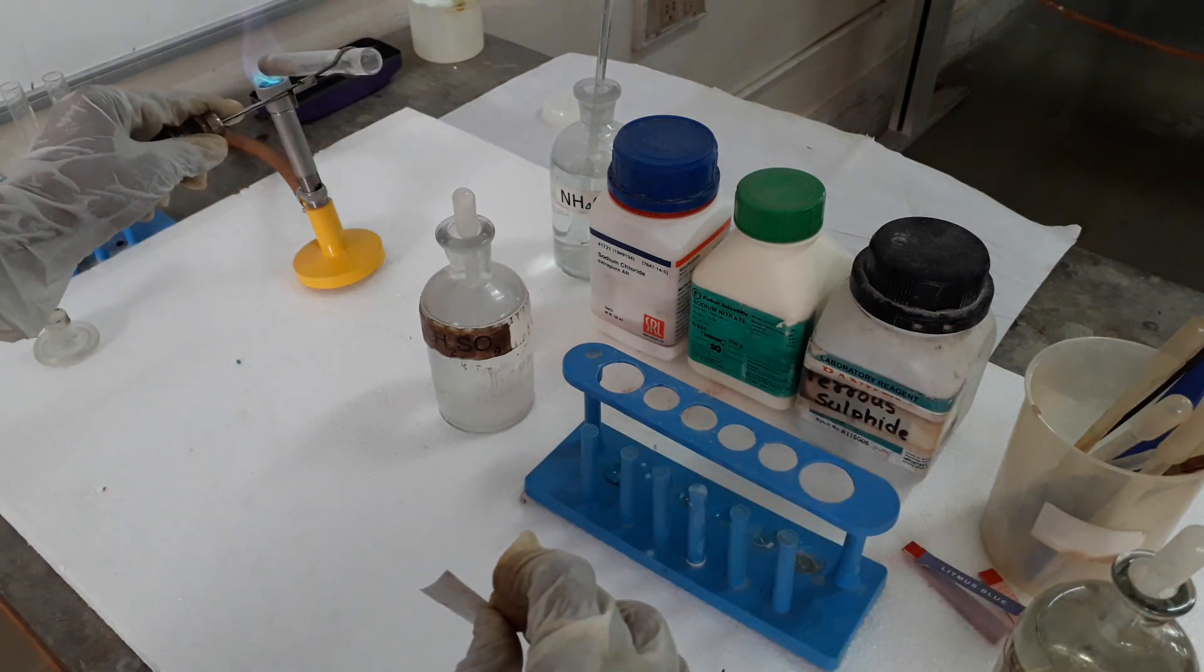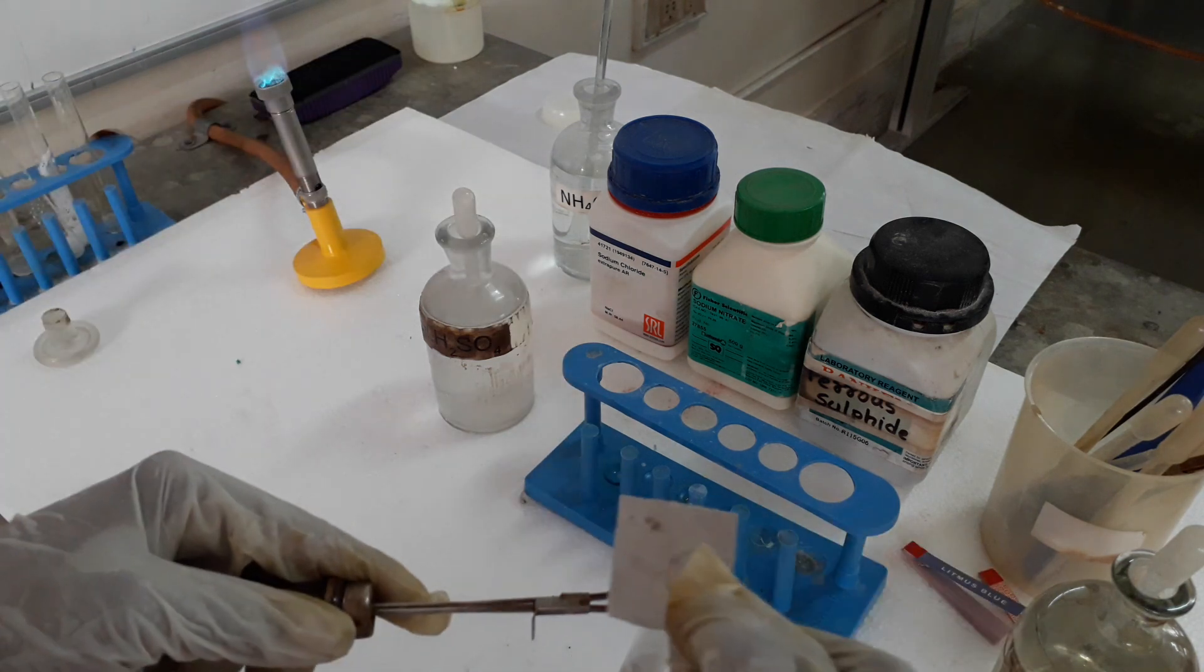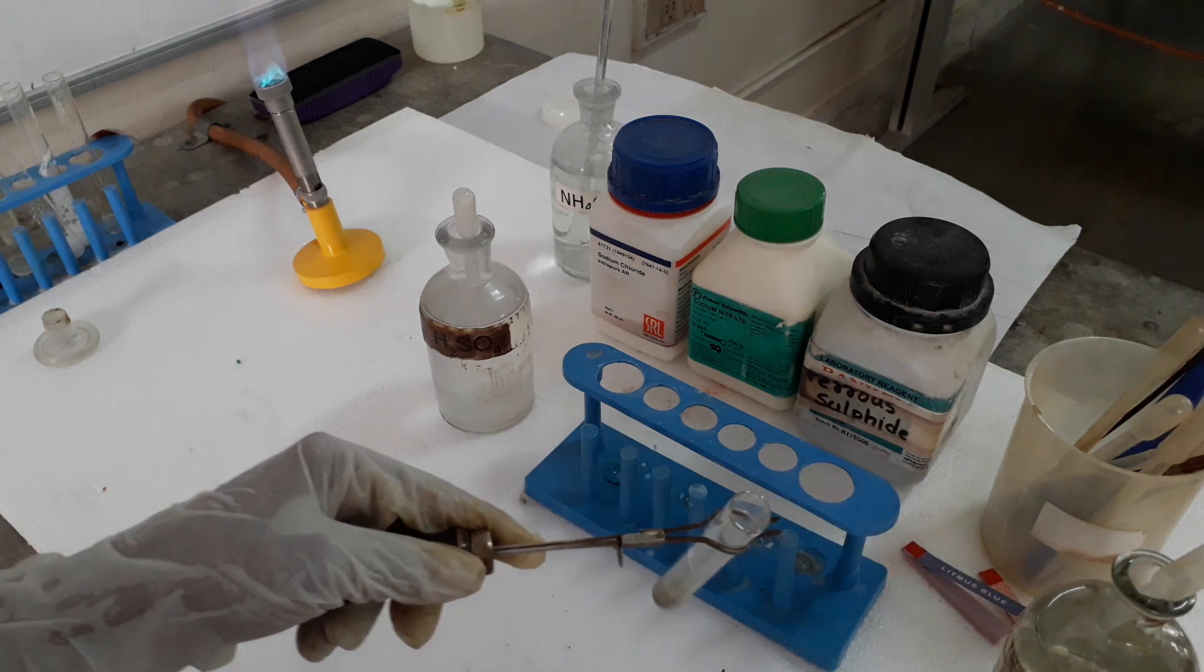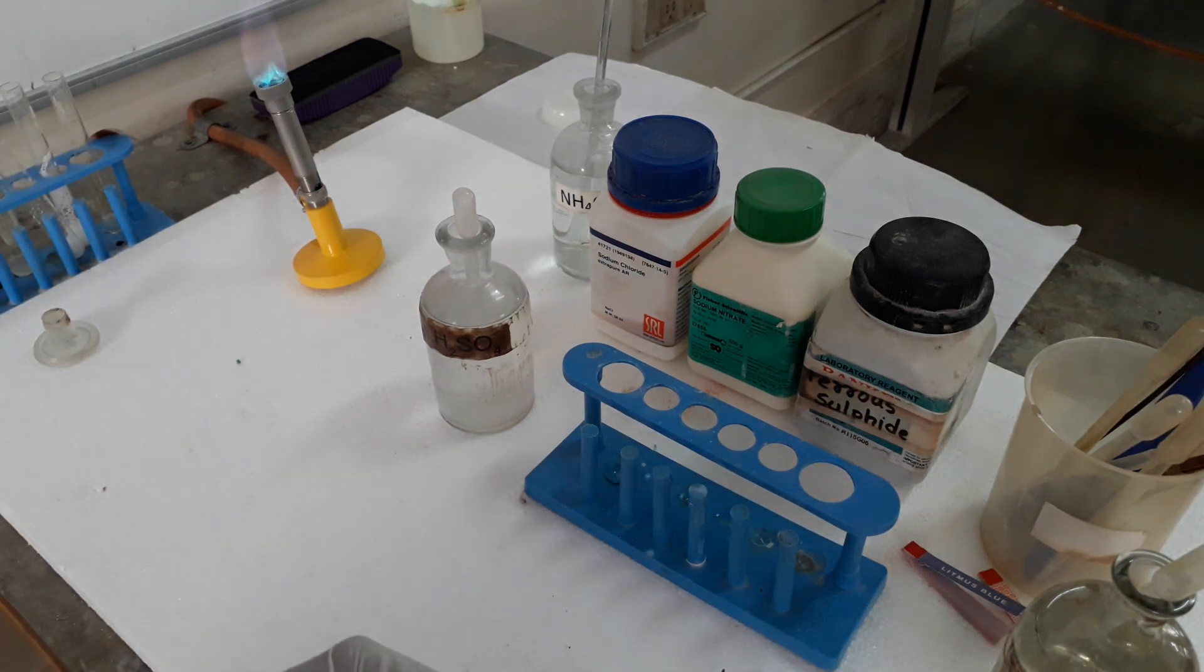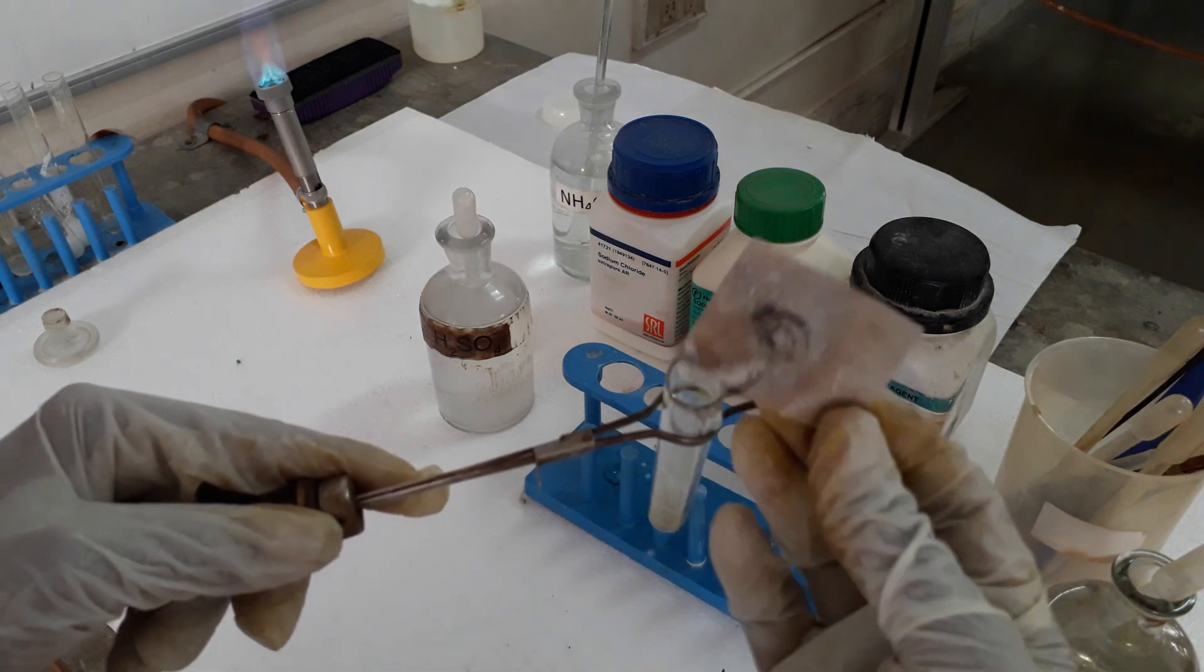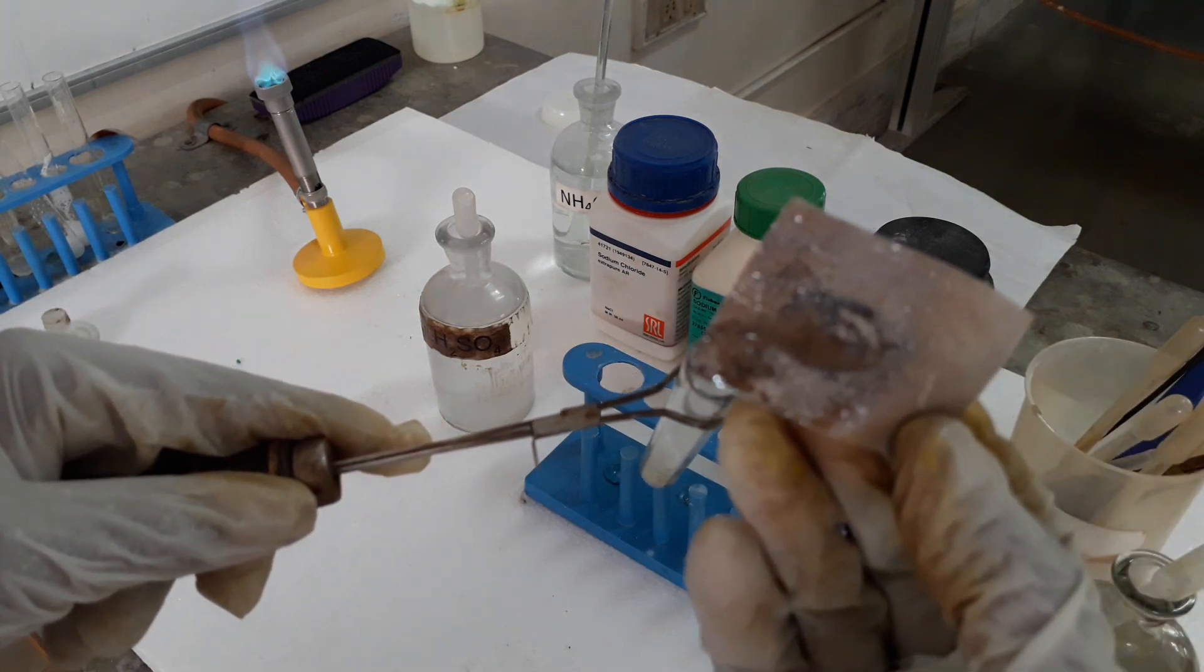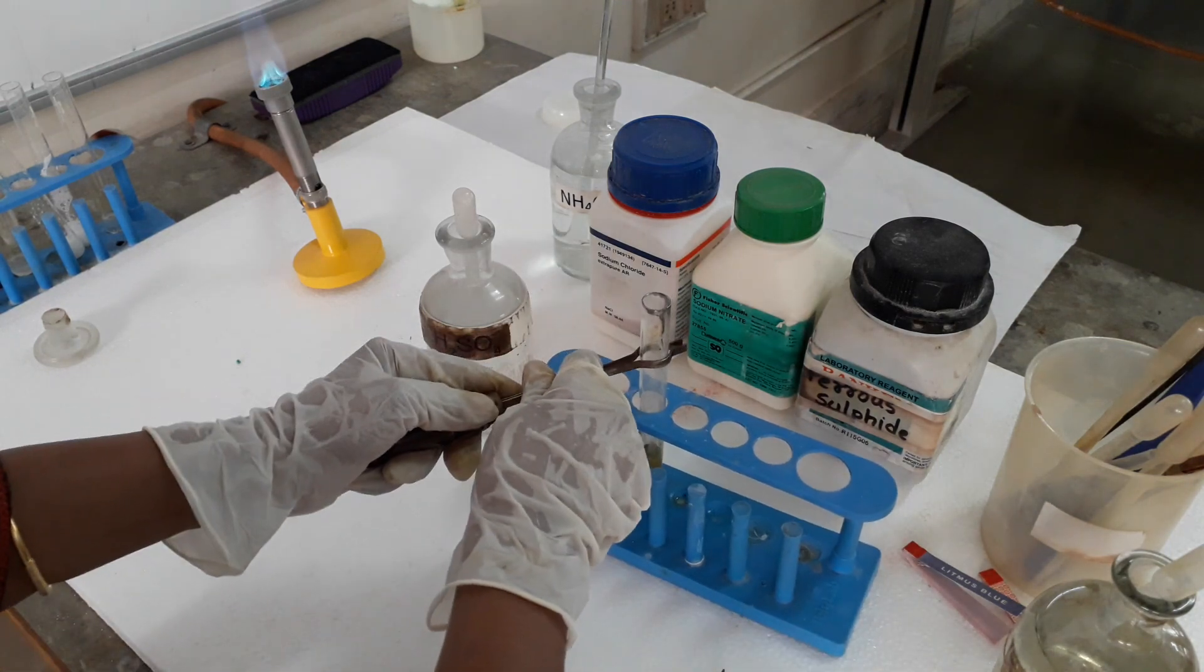Little more we will heat. Lead acetate paper will turn silvery black. See, it has turned completely—this is called silvery black. The gas which is coming out has a rotten egg smell and is turning the paper silvery black. This confirms that the salt has sulfide as anion, S2 minus.